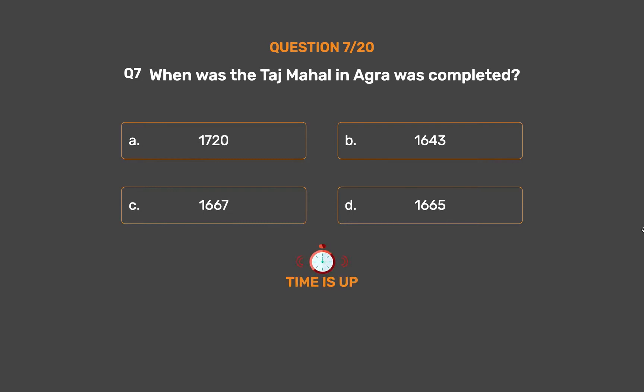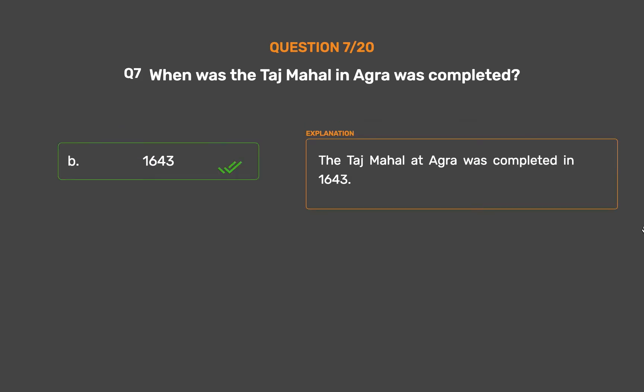The correct answer is Option B: 1643. The Taj Mahal at Agra was completed in 1643.